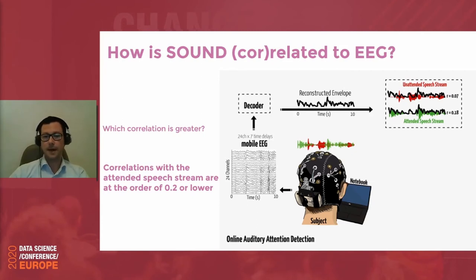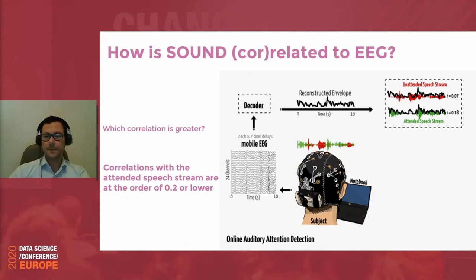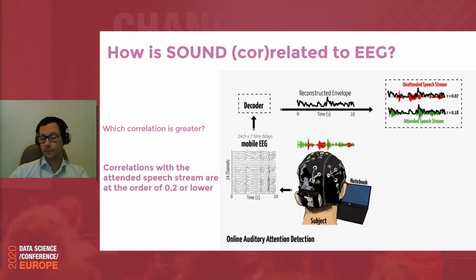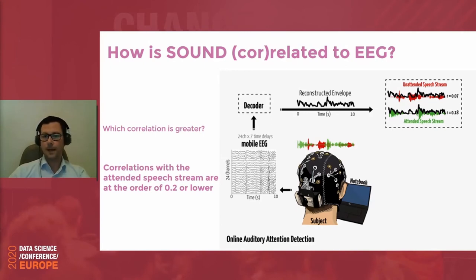What the brain does is not simple to replicate at a machine level. People with hearing impairment have a device connected directly to their auditory nerve that should help them hear their surroundings, but this device cannot yet do what the healthy brain does — diminish the speaker we don't want to hear. What we tried was transforming the mobile EEG of a healthy listener using a decoder — a machine learning-driven linear regressor — to reconstruct an envelope of the brain waves the person actually had, and correlate this with the speech envelope of each speaker.